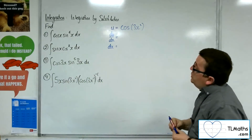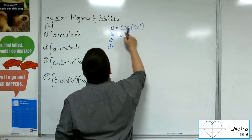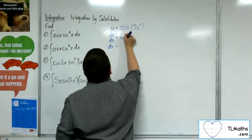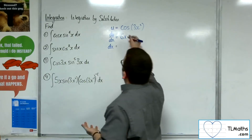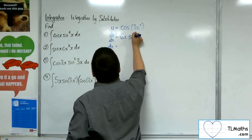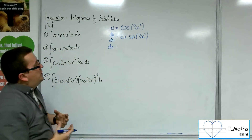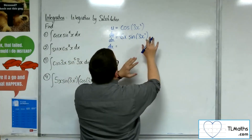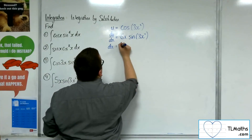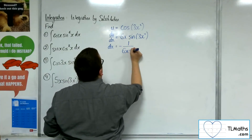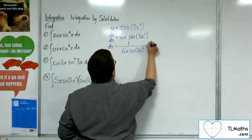When I differentiate that, the derivative of what's inside comes outside. So 3x squared differentiates to 6x, and the cosine differentiates to minus sine. So I'm going to have minus 6x sine of 3x squared. I then want to rearrange that: multiplying up by the dx and dividing both sides by minus 6x sine 3x squared, so dx equals minus 1 over 6x sine of 3x squared du.